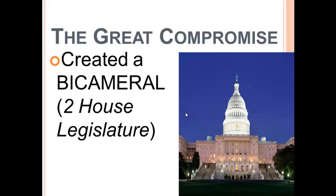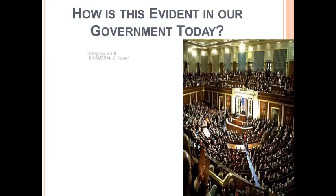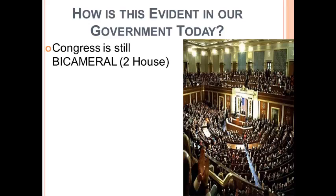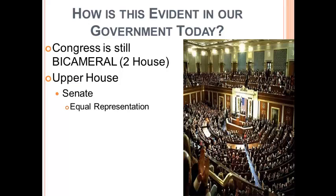Bicameral means a two-house legislature. We see this within our government today in Congress — Capitol Hill — and many of the 50 state governments also have some form of bicameral system. Congress is still bicameral. We have the upper house, which is the Senate. In the Senate, this is based on equal representation per state — two senators per state. 50 states, so there are 100 senators. This is where you see the New Jersey Plan come into play with the Great Compromise, because representation is equal.